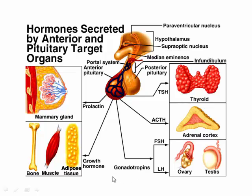Gonadotropins go to the gonads — the ovaries and testes. FSH stands for follicle stimulating hormone; it was first discovered in females and stimulates the ovarian follicles, but men also have FSH even though the name didn't change. The fourth hormone is LH — luteinizing hormone — involved with the corpus luteum of the ovary. Men also have luteinizing hormone.